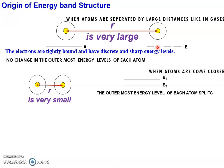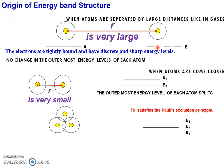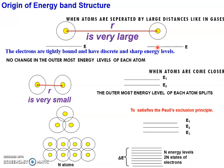This happens to always satisfy the Pauli exclusion principle. If three atoms come closer, the outermost energy level will be split into three energy levels. Suppose n atoms come closer, you can observe n energy levels instead of one — giving 2n states of electrons.